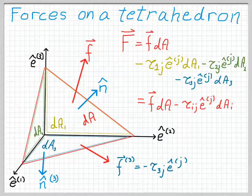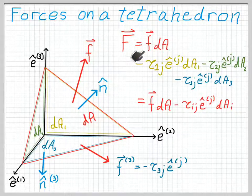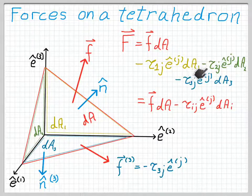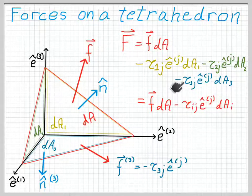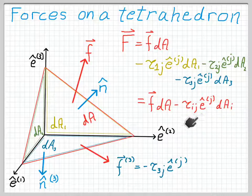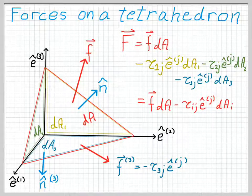We can do that for every plane and add up the results. We have the force per unit area acting on the tilted plane times its area, plus the force per unit area on the one-plane times its area (with a minus sign because it's negative), plus the force on the two-plane, plus the force on the three-plane. The result is the force on the tilted plane times its area minus the sum over j of tau_ij times dai — the sum of the force per unit area on each face of the tetrahedron times the area of each face — giving us the net force.